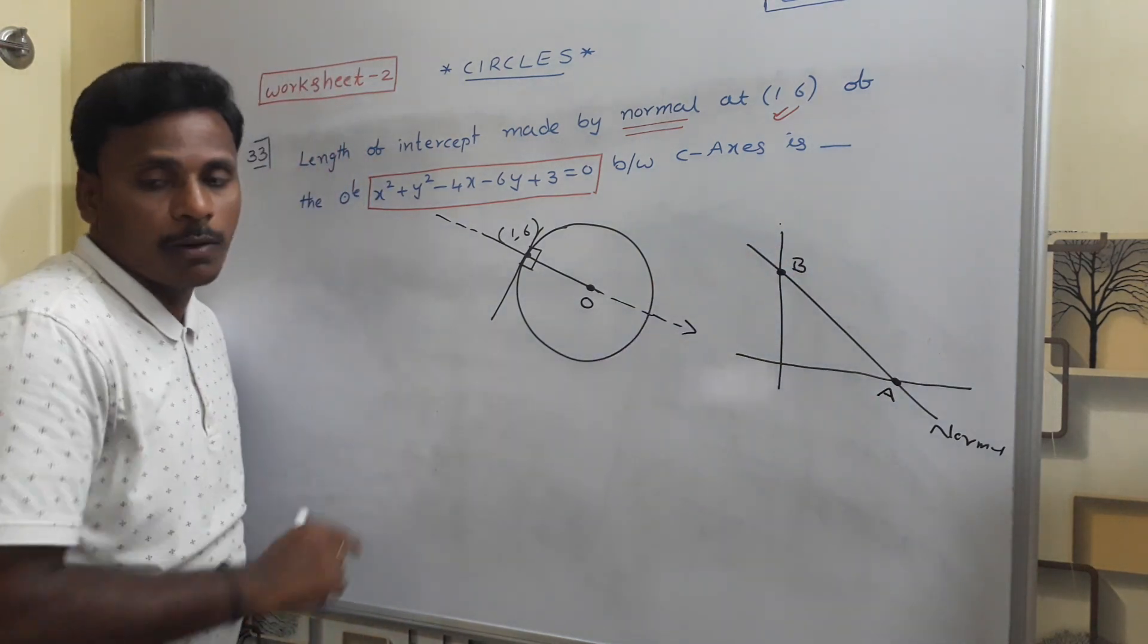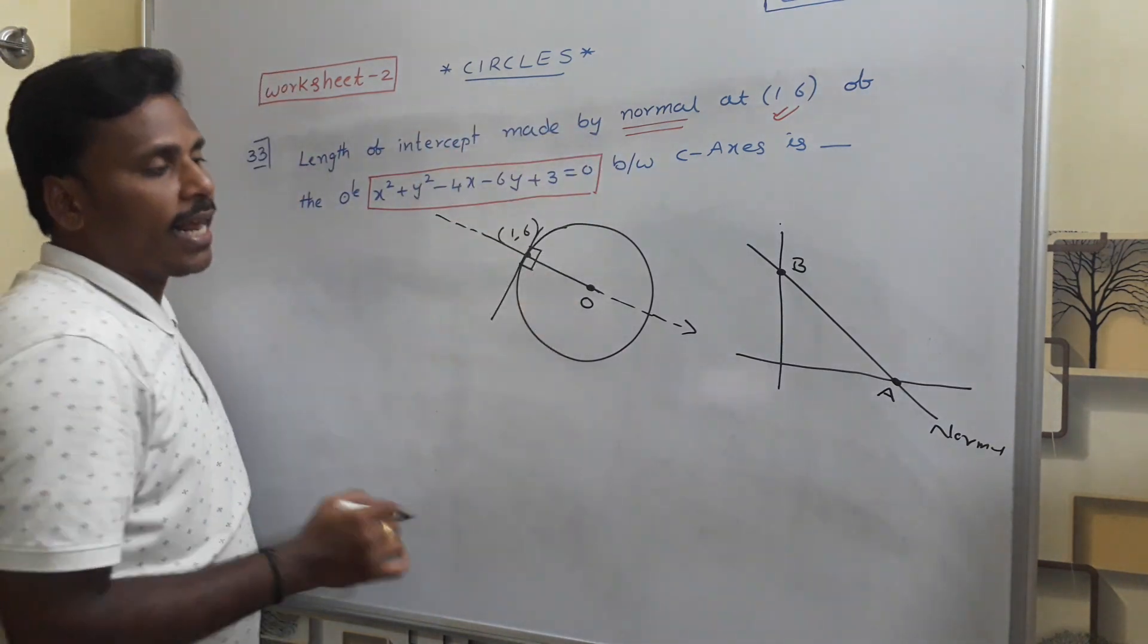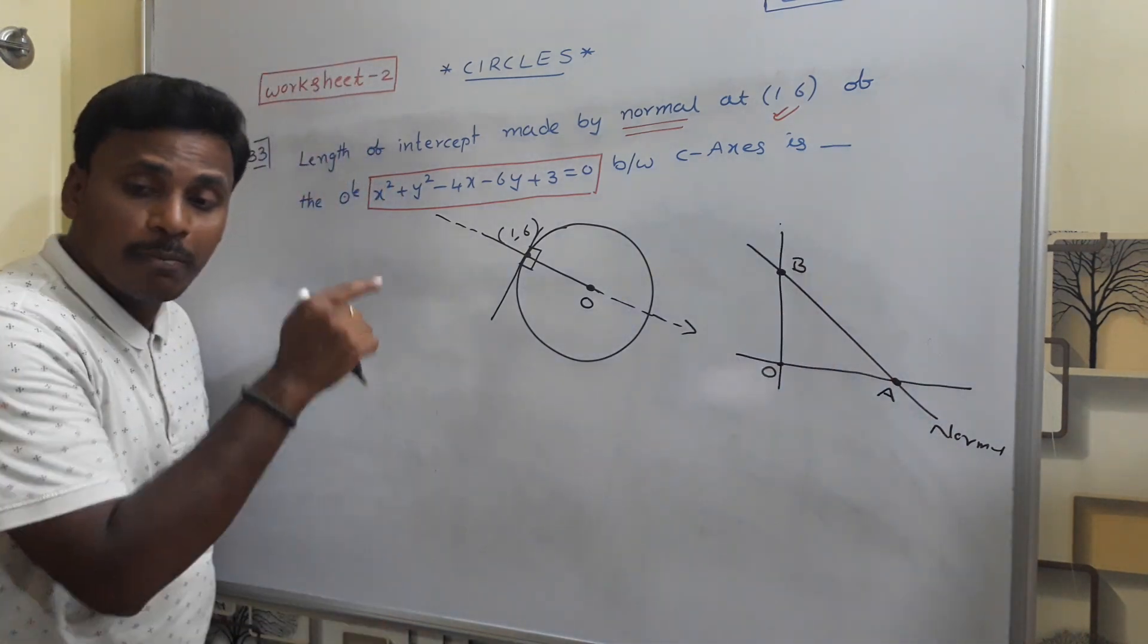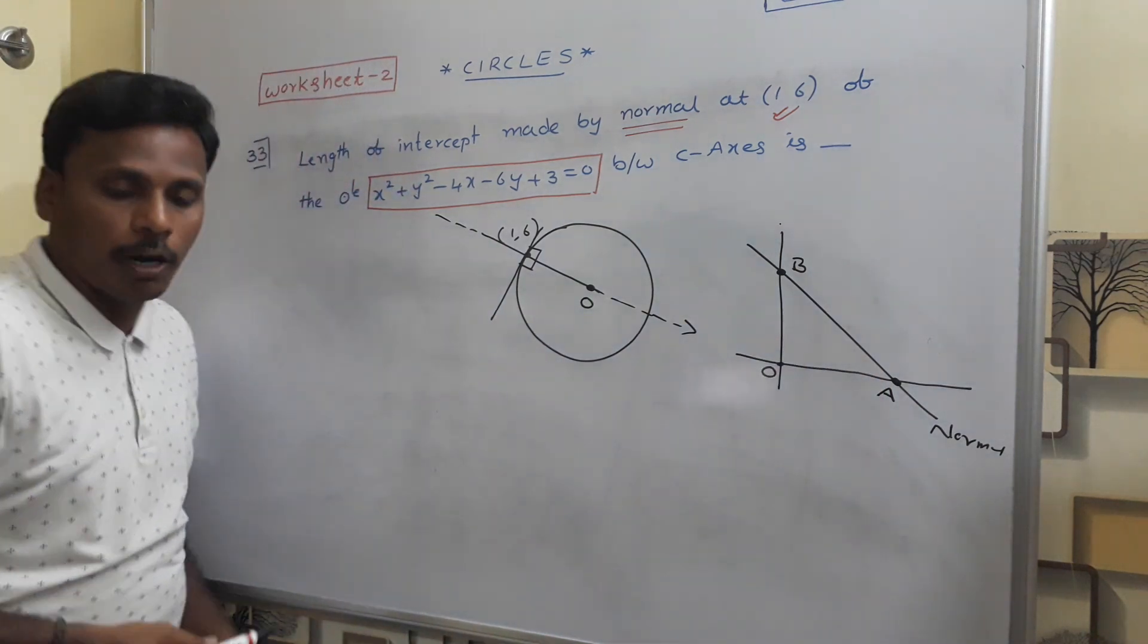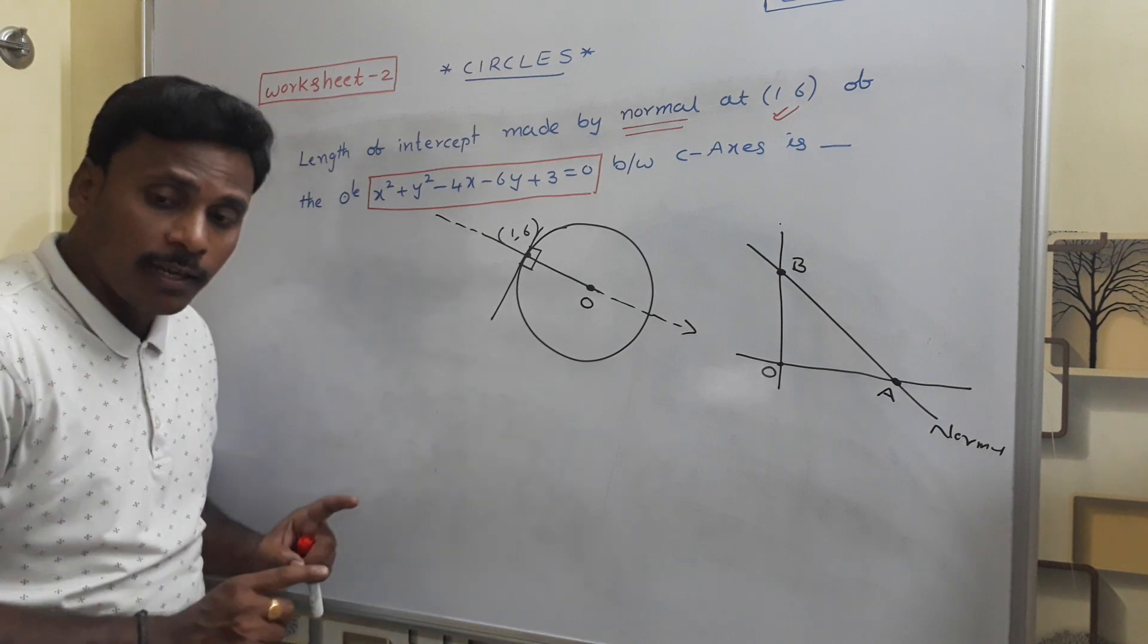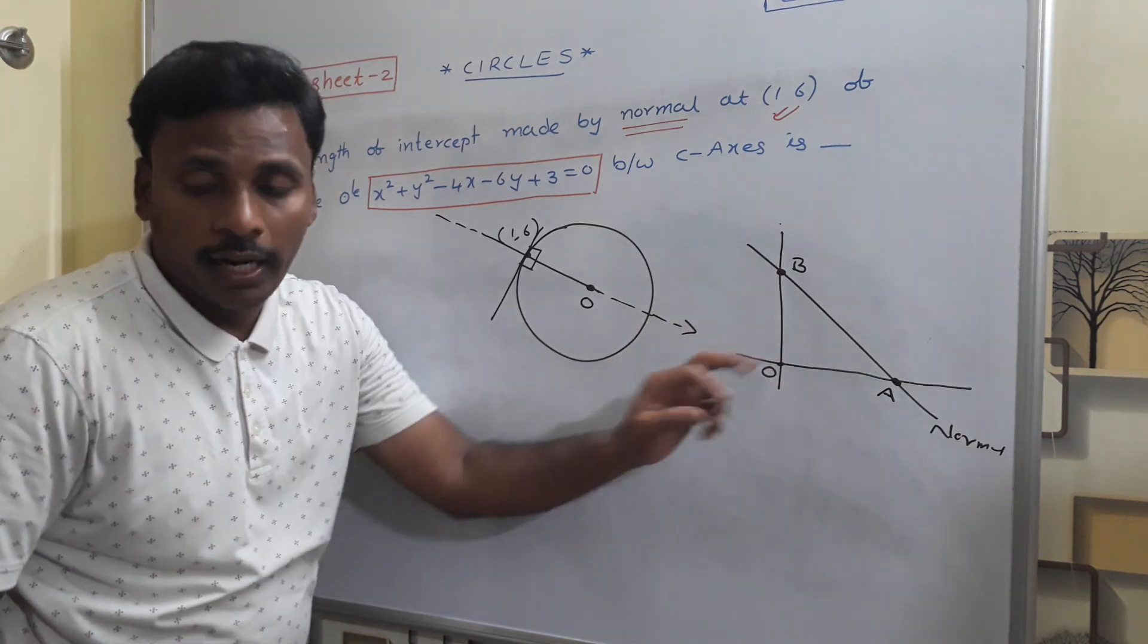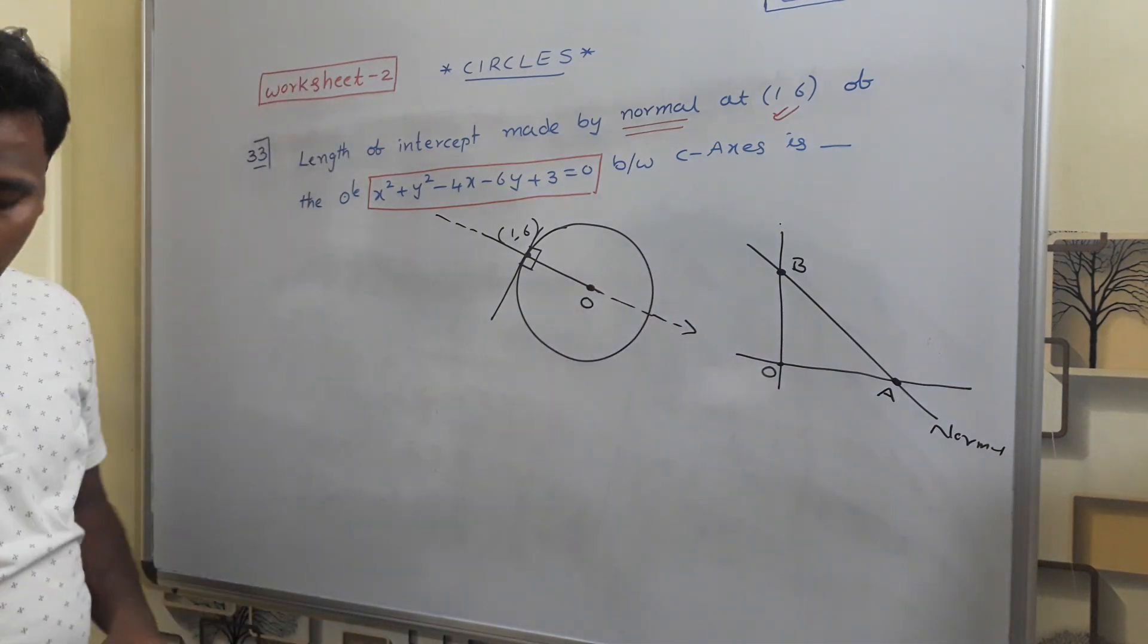The normal intersects x-axis and y-axis at a point. The length of intercept is made by the normal between the coordinate axes. This AB length is the intercept made by the normal. First, normal equation we'll recall. Then the AB distance - A point to B point, AB distance. This is our action plan.